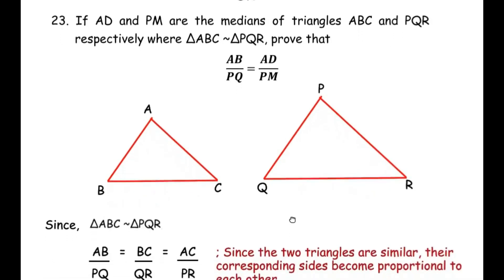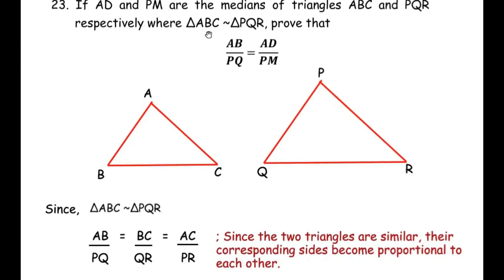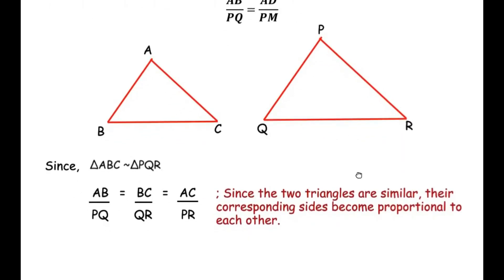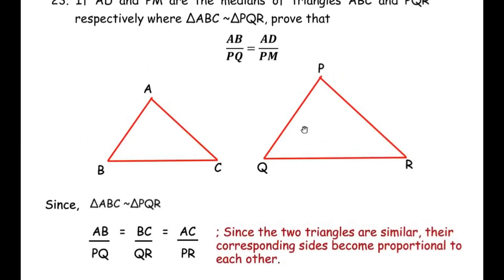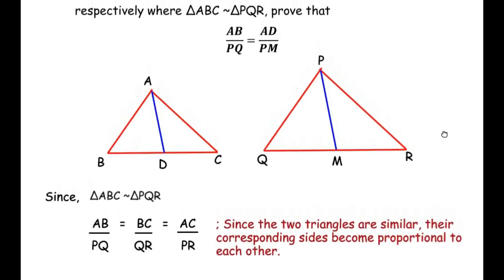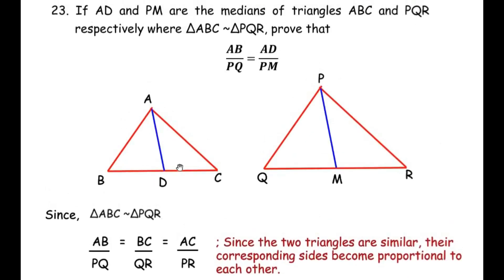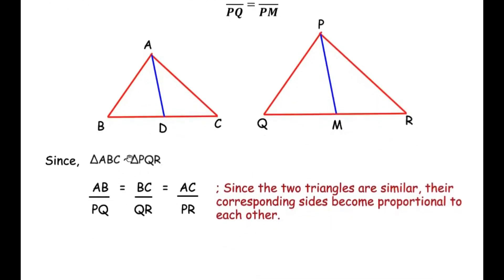Since triangle ABC is similar to triangle PQR, we can write that the corresponding sides are proportional: AB over PQ equals BC over QR equals AC over PR. Next, including the medians — median AD cuts BC into two equal halves so BD equals CD, and median PM divides QR into two equal halves so QM equals MR.